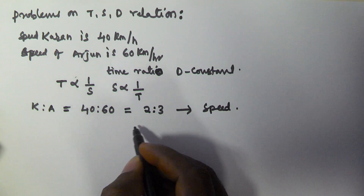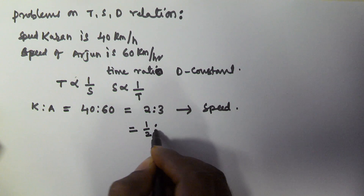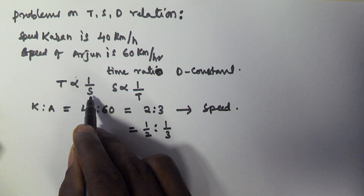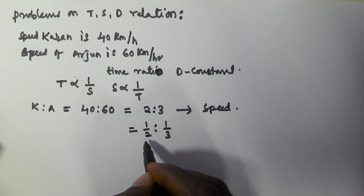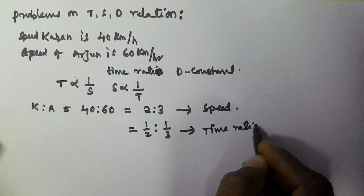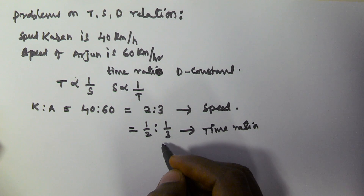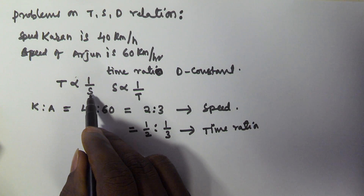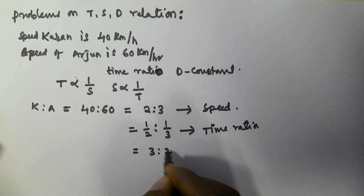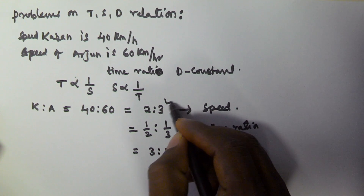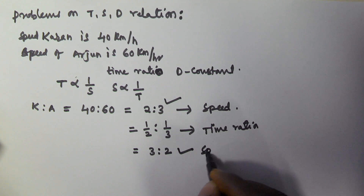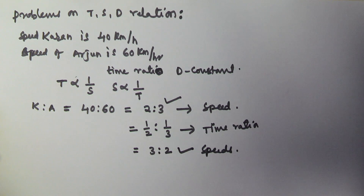Since time is inversely proportional to speed, the time ratio becomes 1/2 : 1/3, which gives us 3:2. So if the speed ratio is 2:3, then the time ratio is 3:2. I hope you got this one.